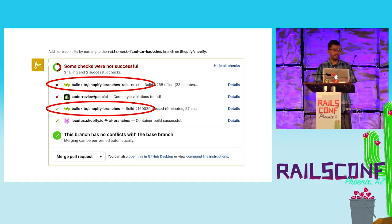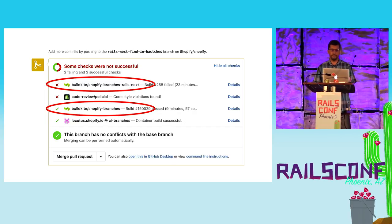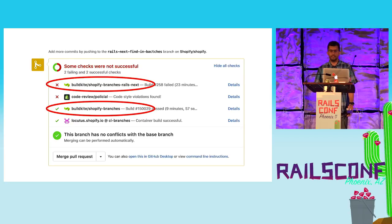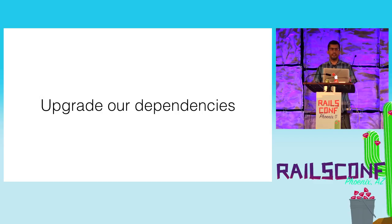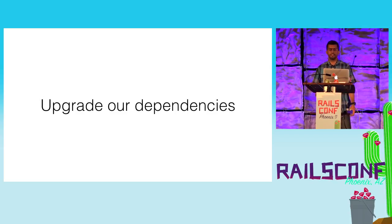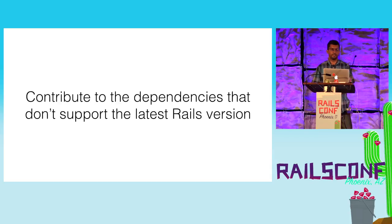With dual booting in place, it's now possible to run the codebase with two different versions of Rails. So we created a parallel CI build running with both Rails 4.2 and Rails 5. Given that, we could start working on the upgrade itself. We began by upgrading all our dependencies, making sure they worked with both versions. When a version couldn't support Rails 5, we contributed back to those dependencies.